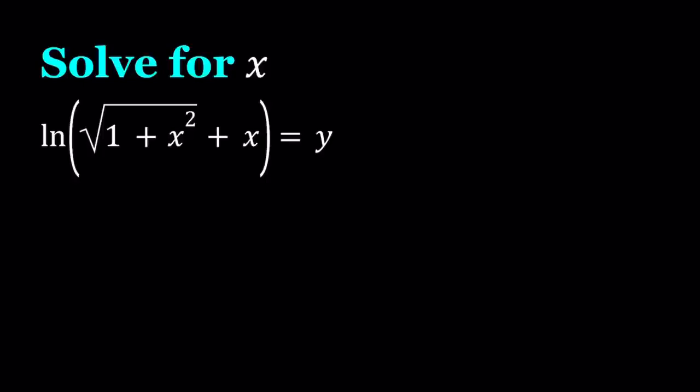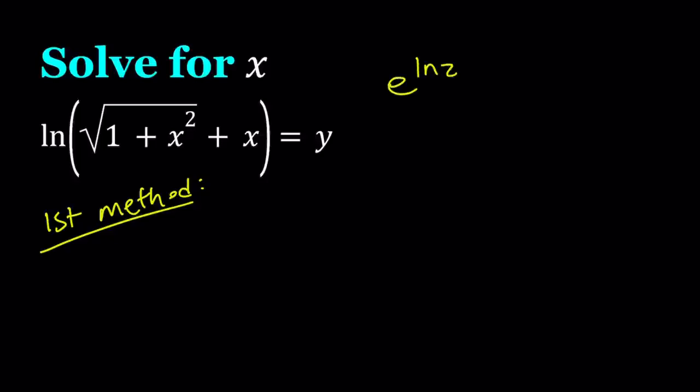I'll be presenting two methods, and let's start with the first method. For our first method, we're going to use the fact that e to the power ln of something equals something. So e to the power ln of z equals z. Obviously z needs to be greater than zero — the logarithmic function needs to be well defined — so those conditions need to be satisfied by x, but we don't have to worry about it right now.